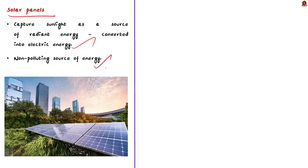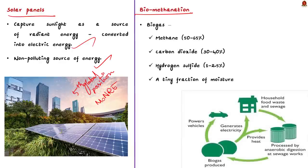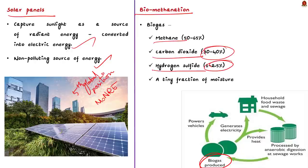India has achieved fifth global position in solar power deployment, surpassing Italy, according to the Ministry of New and Renewable Energy. The third project is biomethanation — a process by which organic material is microbiologically converted under anaerobic conditions to biogas. This biogas is primarily composed of methane (50–65%), carbon dioxide (30–40%), hydrogen sulphide (1–2.5%) and a small fraction of moisture, making it a renewable source of fuel.